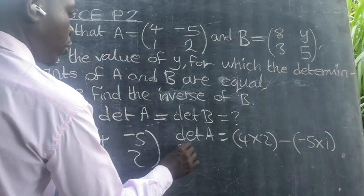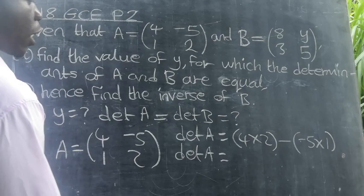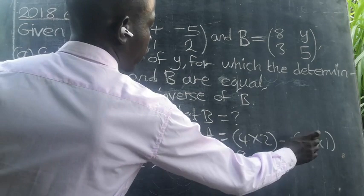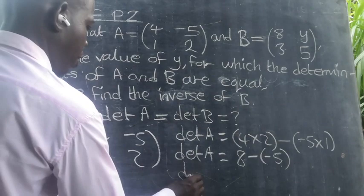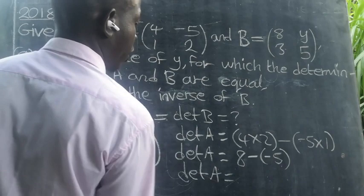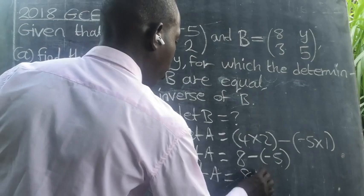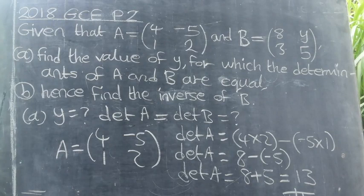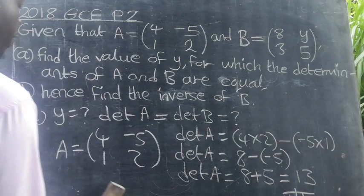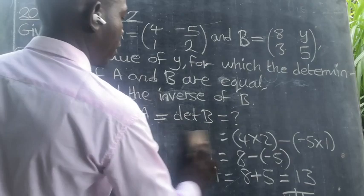The determinant of matrix A equals 4 times 2, which is 8, minus negative 5 times 1, which is negative 5. So negative times negative gives positive, and 8 plus 5 equals 13. So the determinant of matrix A is 13. Now we can find the value of Y.